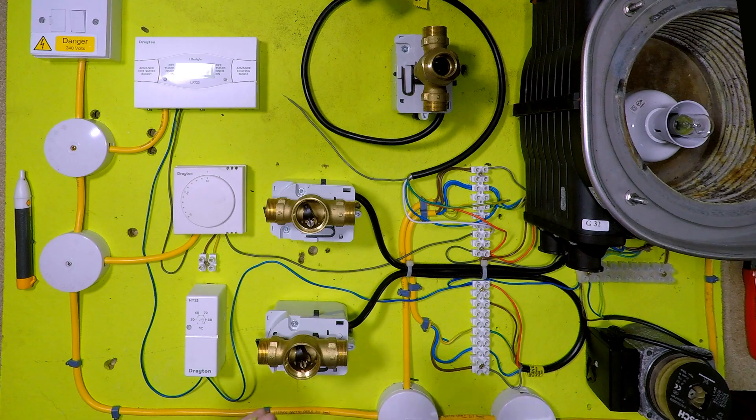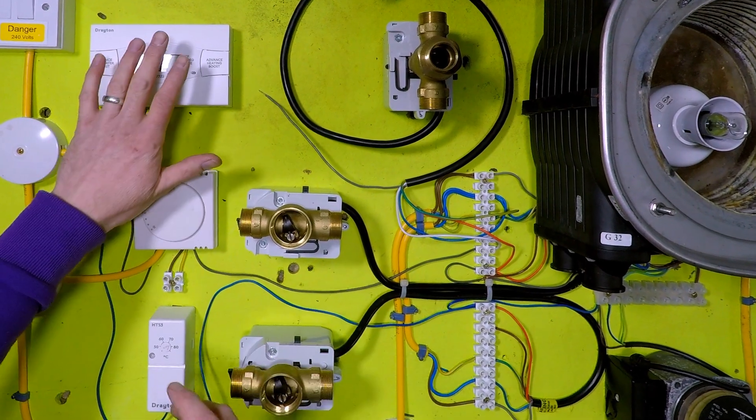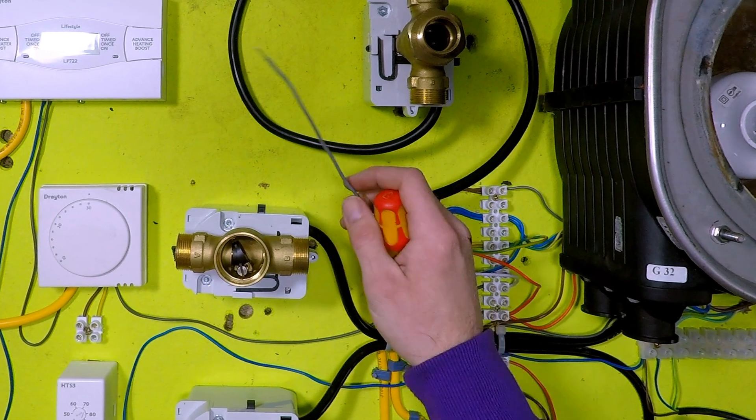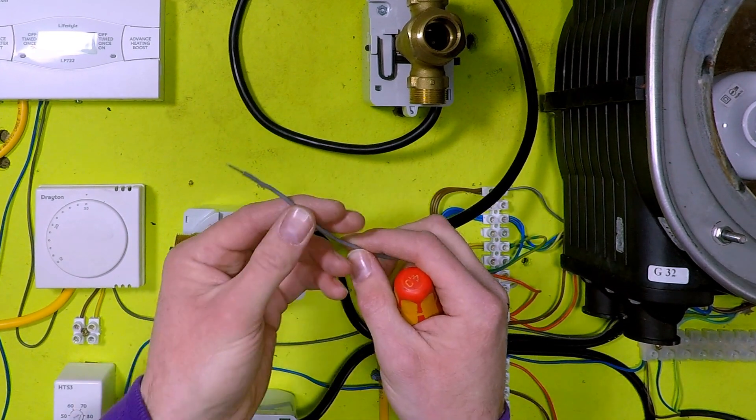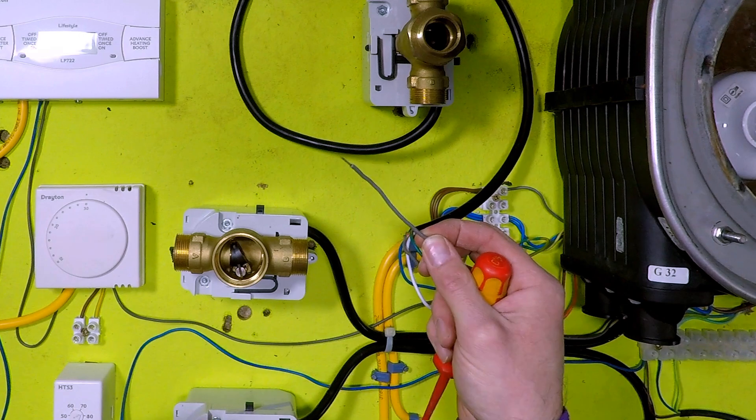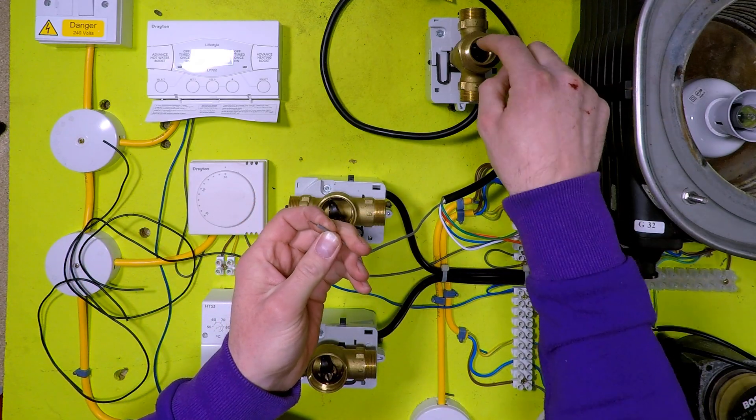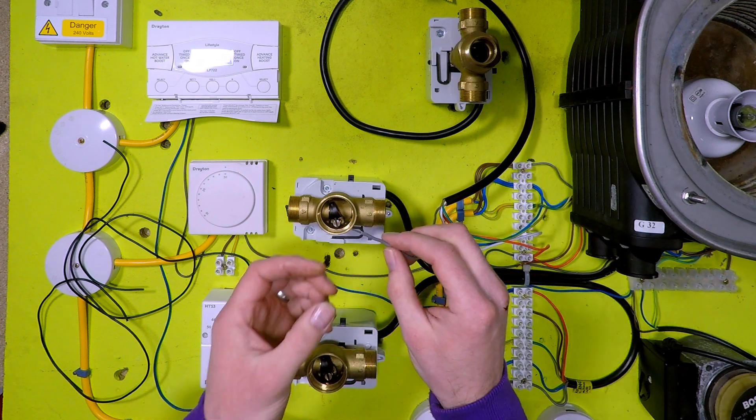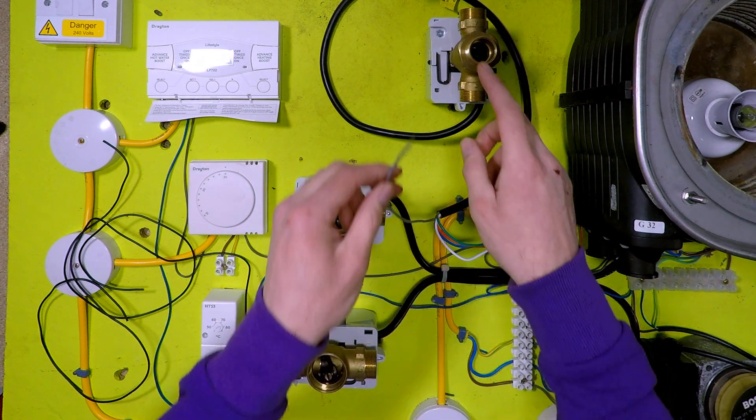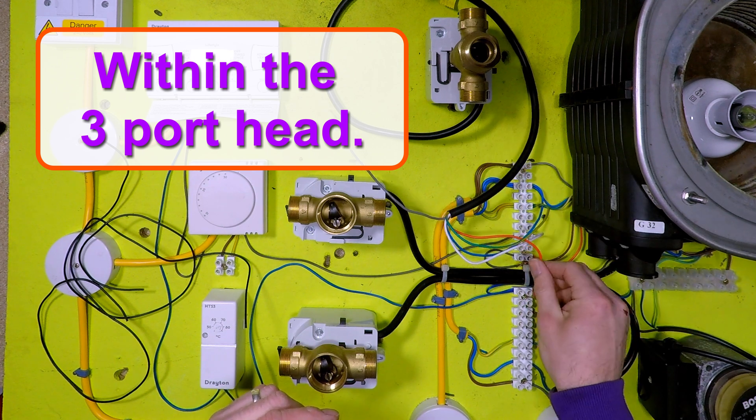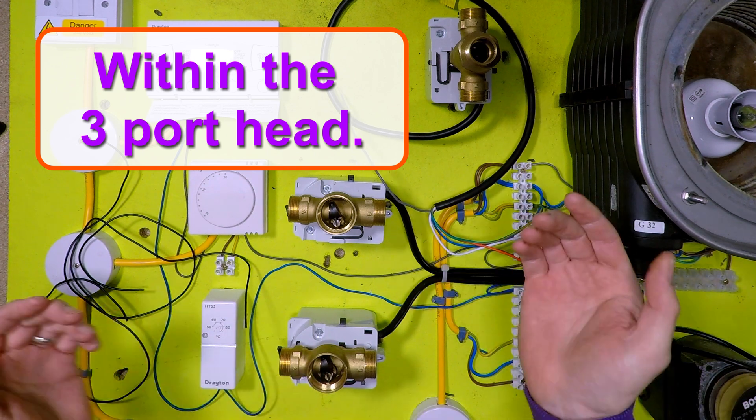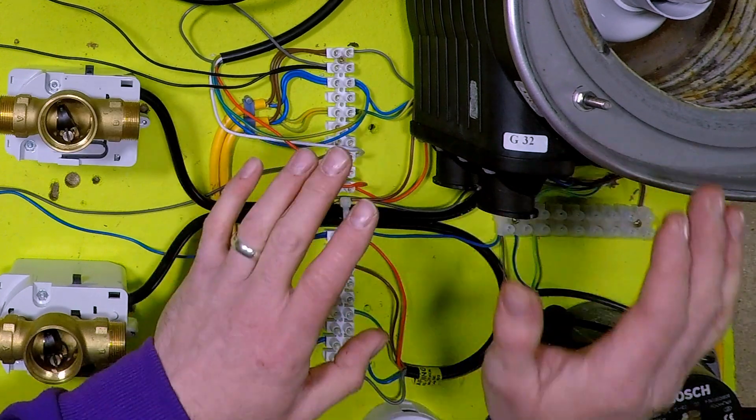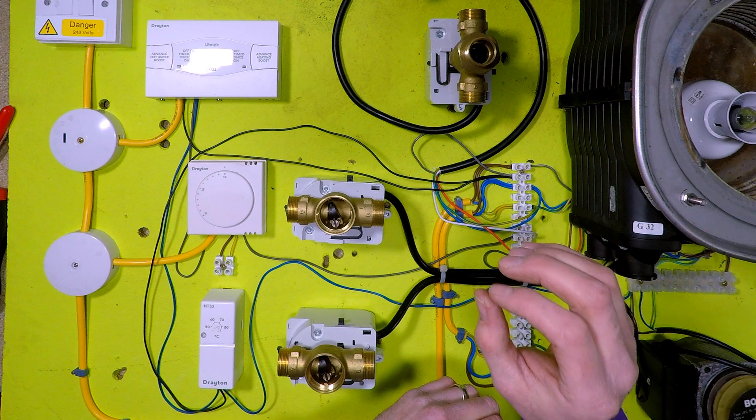The wire - so my point there was you have nothing on a heating only demand on the three port. You have nothing telling the boiler to work unless you have your gray wire widened. Now what the gray wire is, is hot water off. Hot water off gives power to the gray to move the valve to that last, that final position of heating only. Okay, and that's also what then gives the orange wire power.